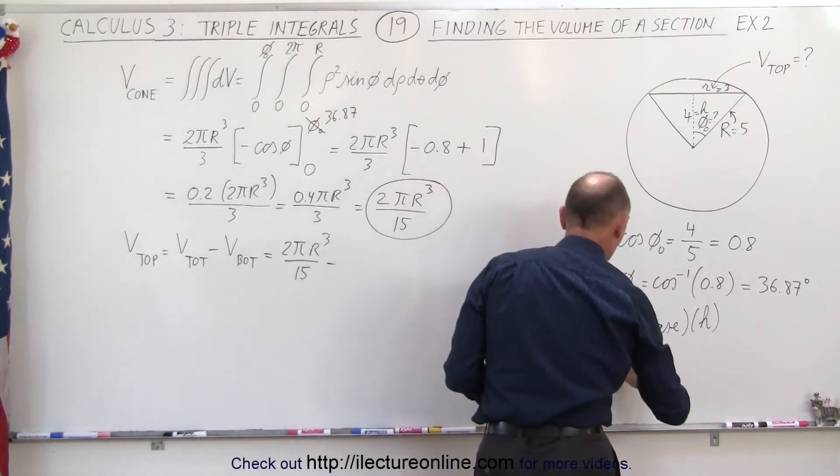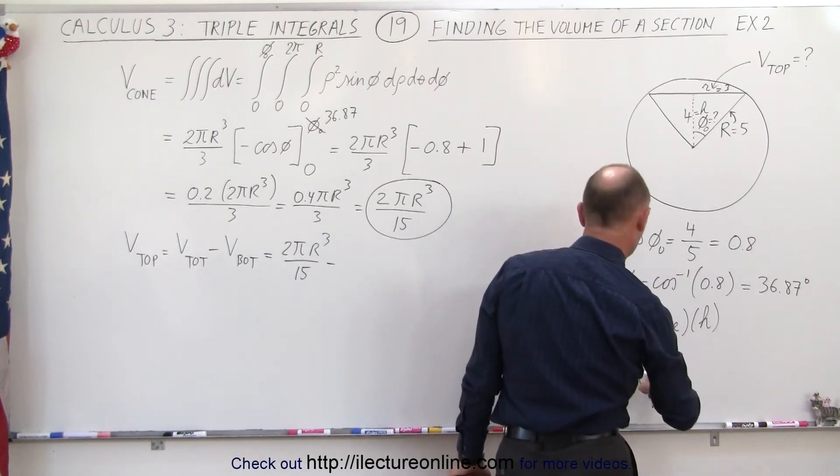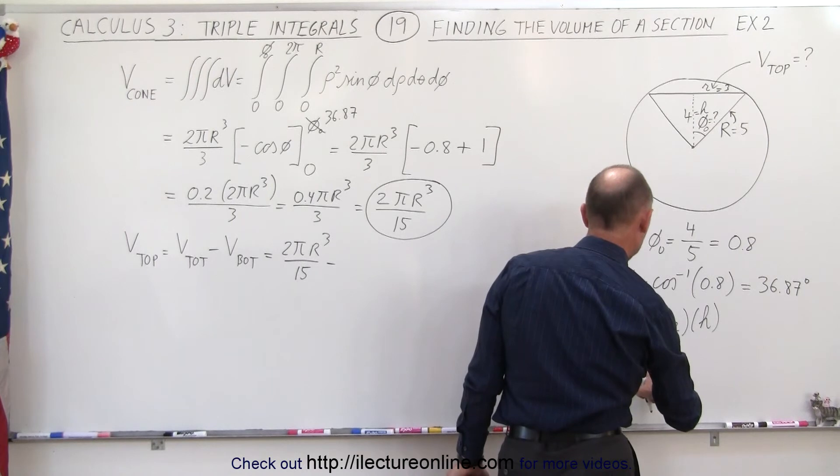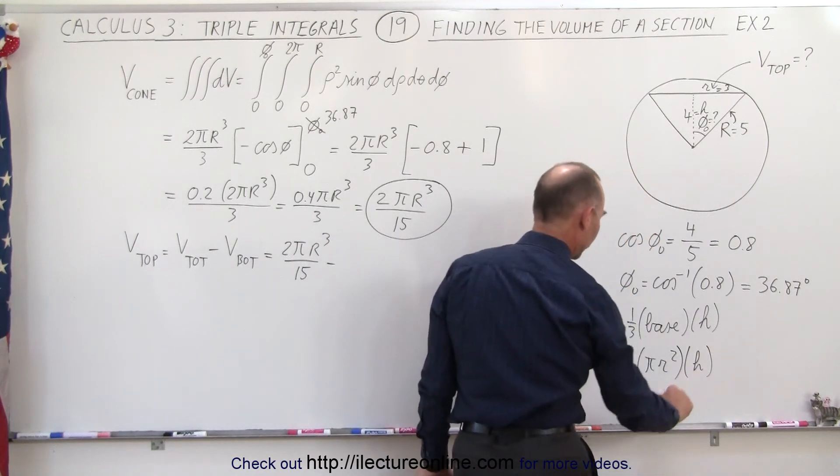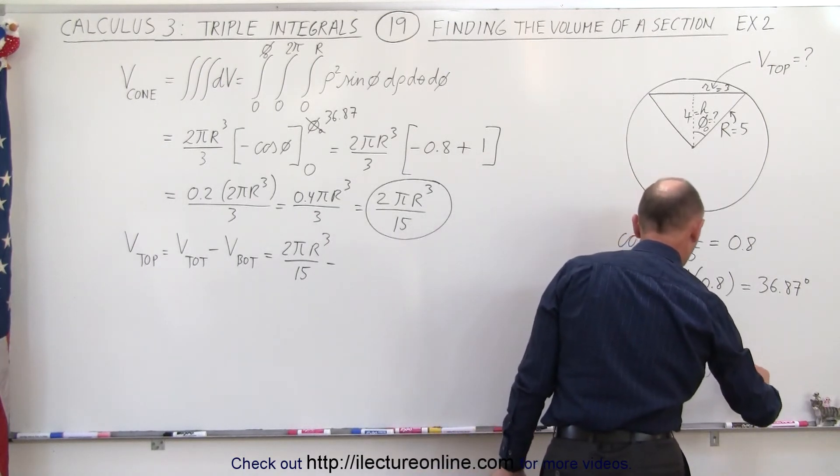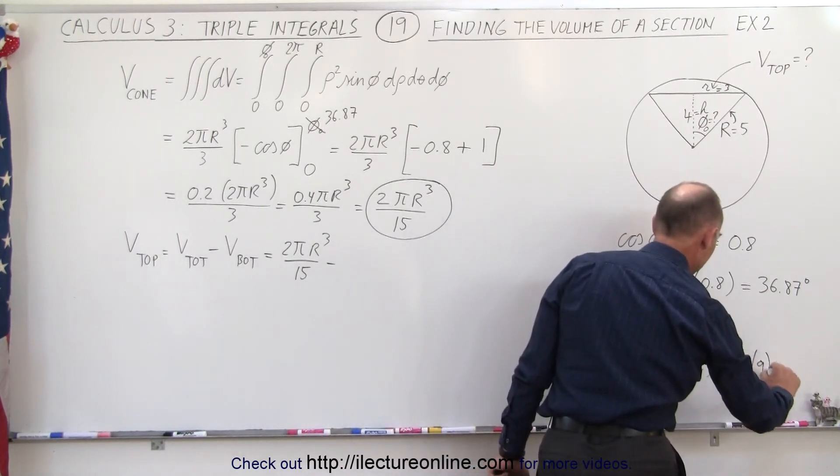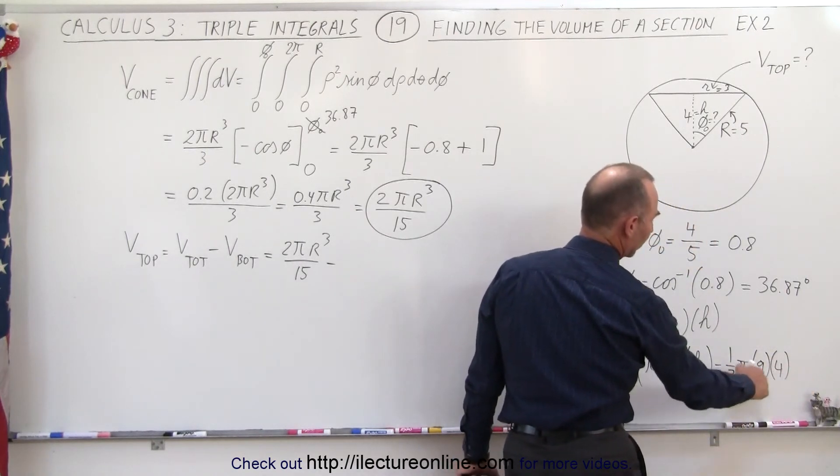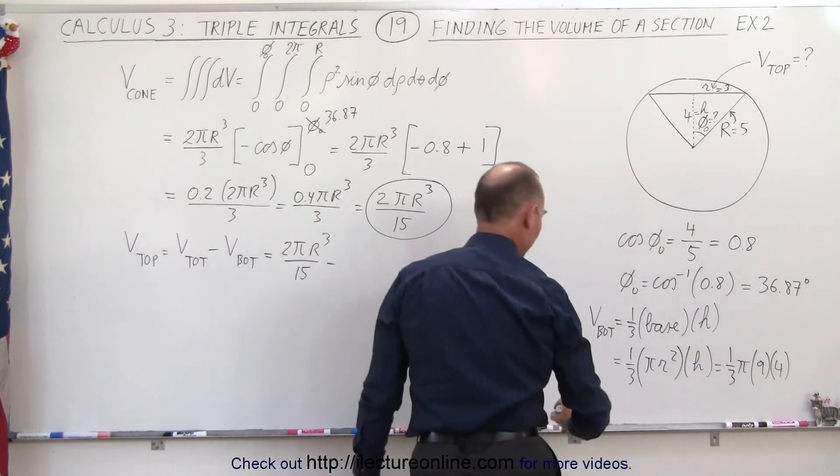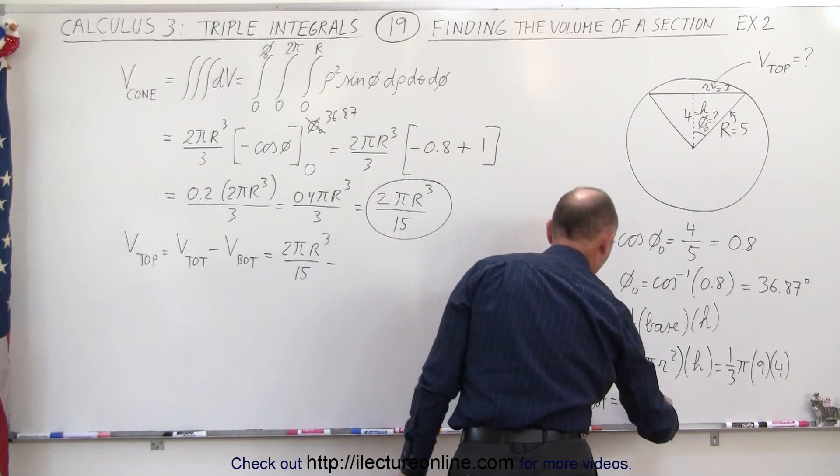Which is equal to 1/3 the base, which would be equal to, the base would be πr² times the height h. And of course r is 3 and h is 4, so that would be equal to 1/3 π times 3 squared, that would be 9, times h, which is 4, so it gives us 9 divided by 3, which is 3 times 4, which is 12π. So the volume at the bottom is equal to 12π.